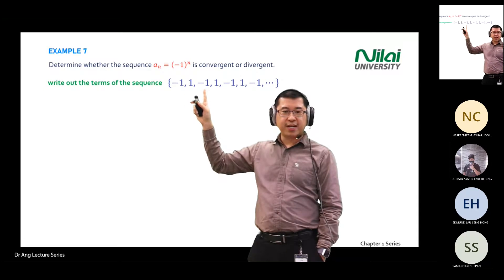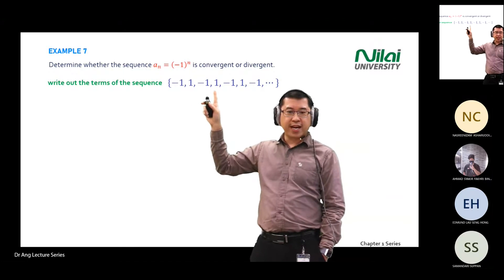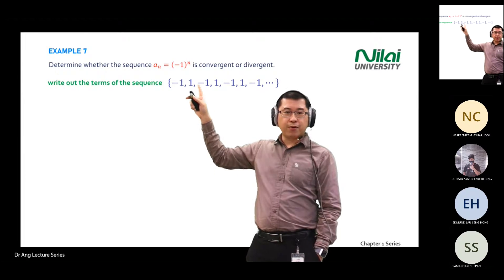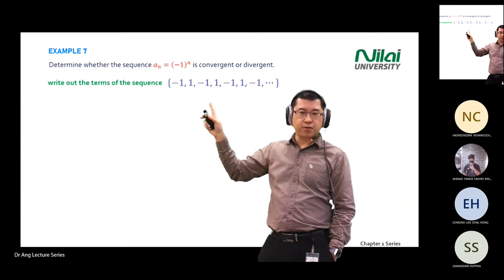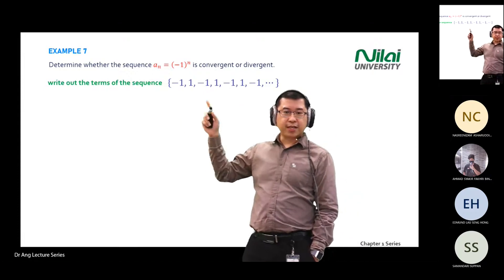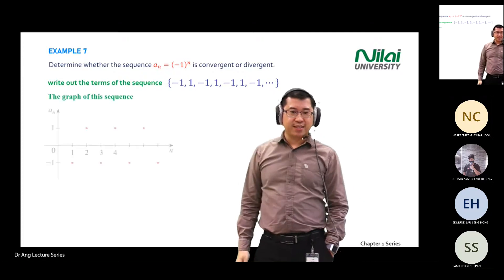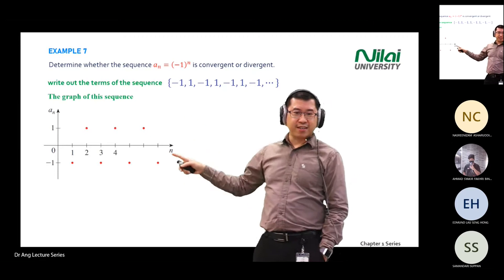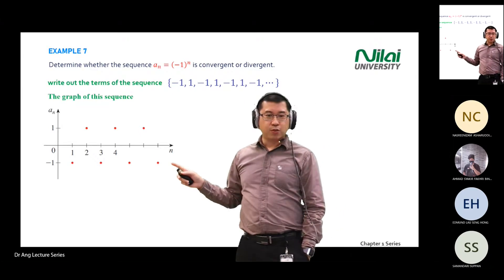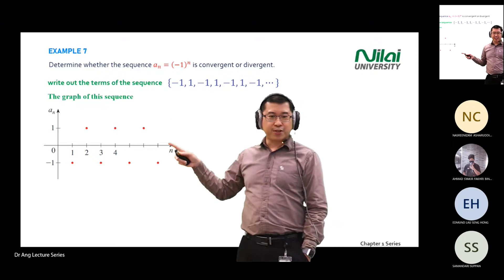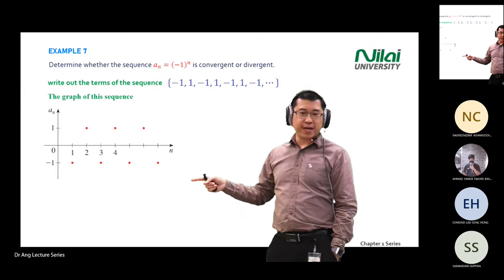If n increases to two, (-1)^2 gives positive one. If n becomes three, (-1)^3 gives minus one. The fourth term, (-1)^4, gives positive one. You will see that this data alternates: minus one, positive one, minus one, positive one.